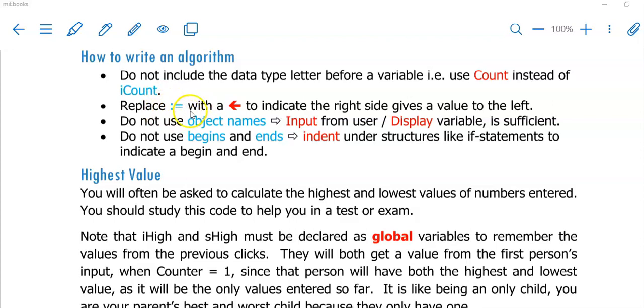Everywhere where you would have used an assignment statement, replace that with an arrow pointing from the right to the left to indicate the right gives a value to the left.